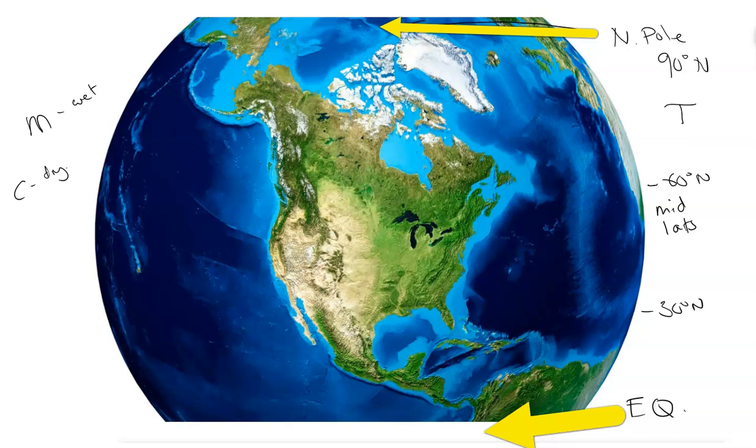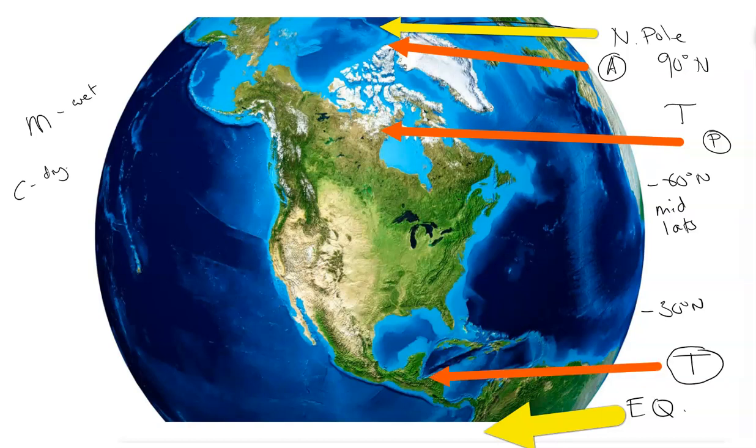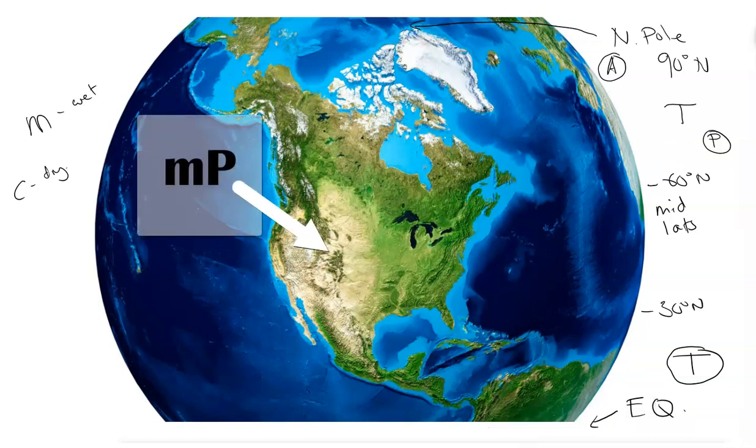We have our Arctic air from the North Pole in this area. We have our polar air from the high latitudes, above 60. And we have our tropical air that's coming from the tropics and up into the mid-latitudes through the Hadley and Ferrel cells. The polar maritime air mass would be up around Alaska or off the coast of Canada.